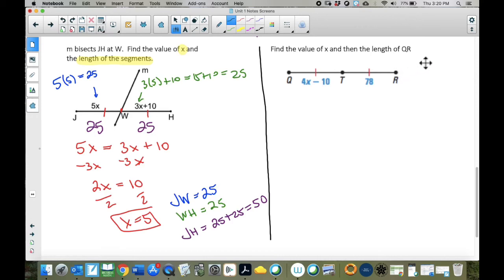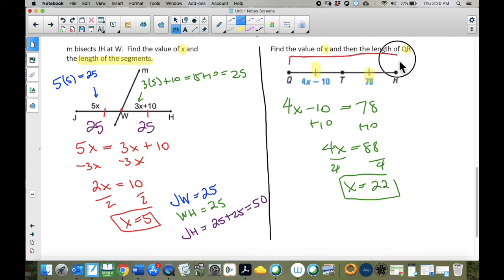Last problem. Find the value of X and then the length of QR. They don't give us a whole lot of information in words, but they give us a lot of information in the picture. Notice the hash marks. Those hash marks tell us we have congruence. Congruence means these two things are equal to each other. So we have 4X minus 10 is equal to 78. So I just need to solve this equation. I'm going to start by adding 10 to both sides. Then we're going to divide by 4. And so if I do that on my calculator, I get X equals 22.